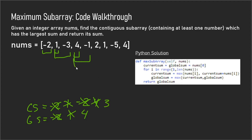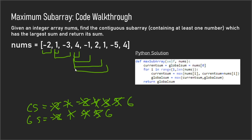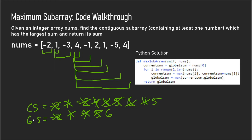We get to 2 and the subarray expands, so the current sum is 5 and our global sum is also 5. We get to 1 and it expands again — current sum and global sum both increase. Then we get to negative 5 and the current sum for that subarray becomes 1. We then include the last element which is 4, so our current sum becomes 5 but our global sum doesn't change.